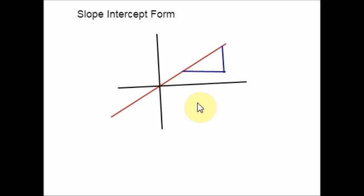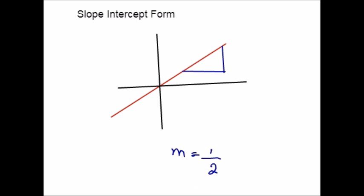For example, let us take a slope of 1 over 2. This means the graph goes up 1 unit for every 2 units it goes over. The slope of a line also tells us about the direction of the line. We can tell whether the line goes up to the right, down to the right, or if it is a horizontal or vertical one.